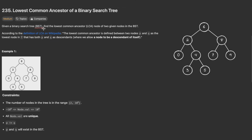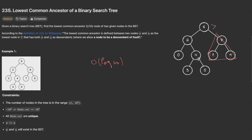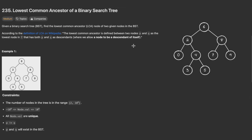Now, since we have a BST — a binary search tree — this is going to help us a lot. We can solve this problem in O(log n) time complexity. In a binary search tree, all elements greater than the root are on the right side, and all elements less than the root are on the left side. This is the key property of a binary search tree.